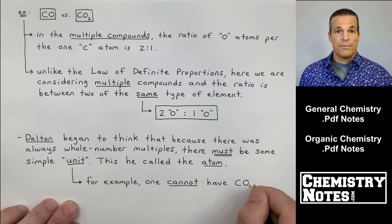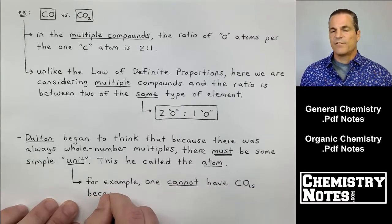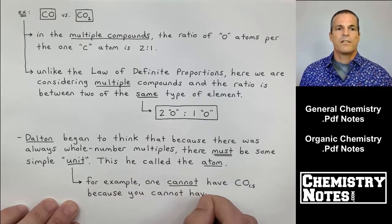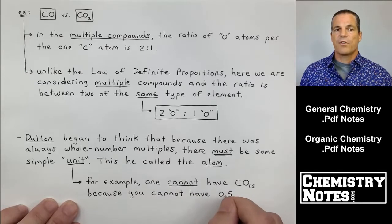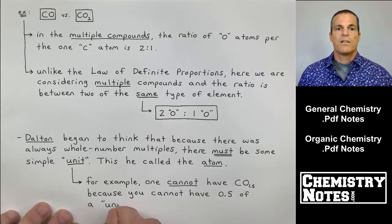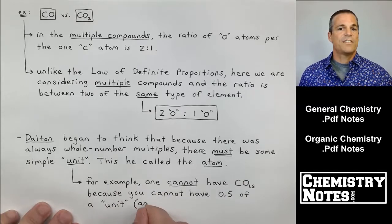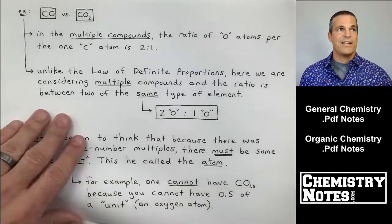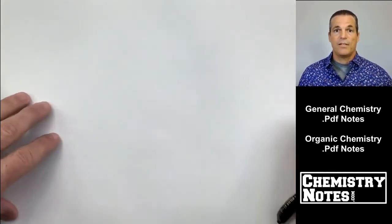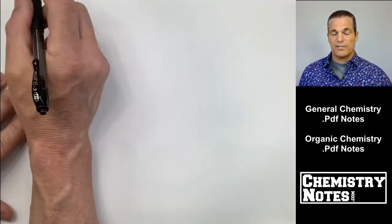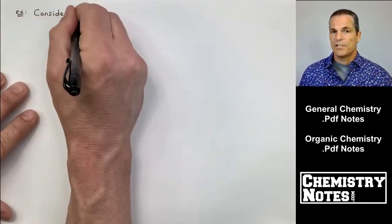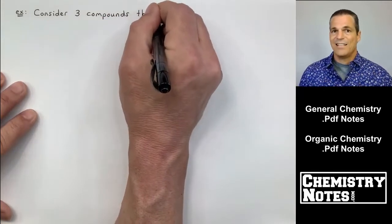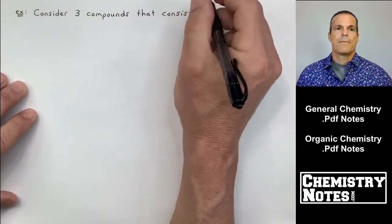So that led him to propose his atomic theory. And we'll get to that very soon in the next page, I believe. But his atomic theory, it's got five little listings, five postulates there, and we'll get to that. But regarding the unit that I have in quotes, for example, this is what Dalton believed. He thought one cannot have CO 1.5 because you cannot have 0.5 of a unit. You can't have half of an atom. And he's right about that. And he's still right to this day.